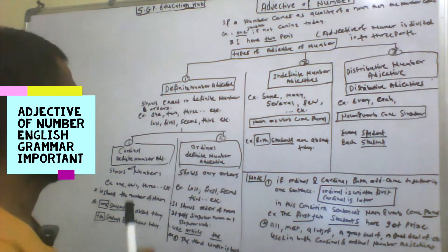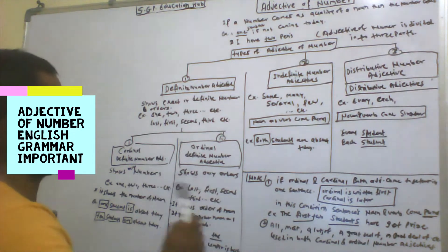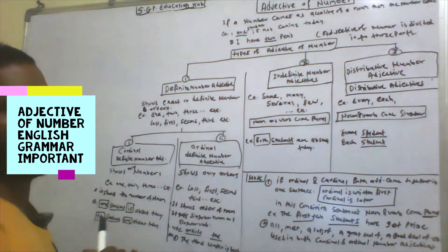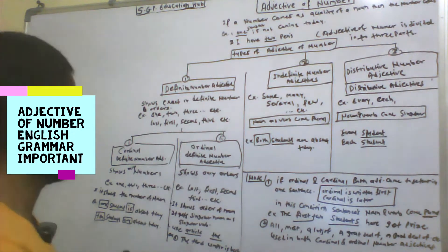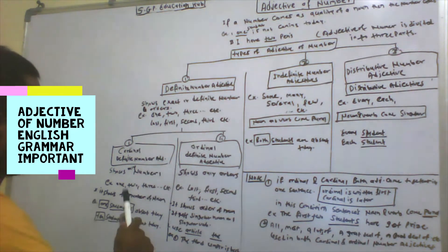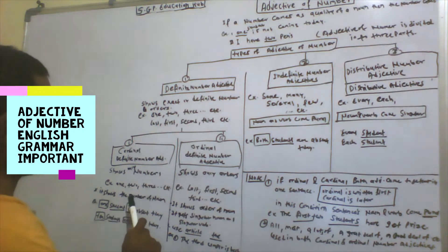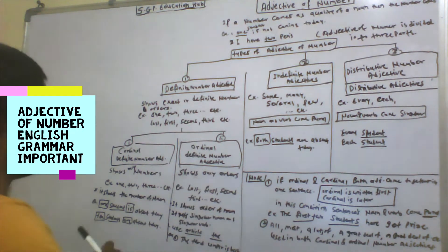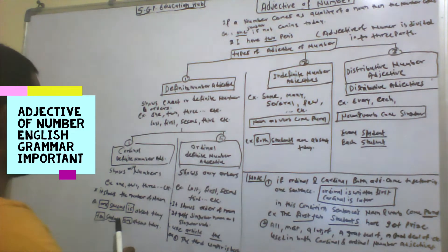Order means first, second, third, etc. Number means one, two, three — all numbers. Cardinal number shows the exact number of a noun, for example: 'One student is absent today,' 'Ten students are absent today.' Ordinal shows the order of the noun.